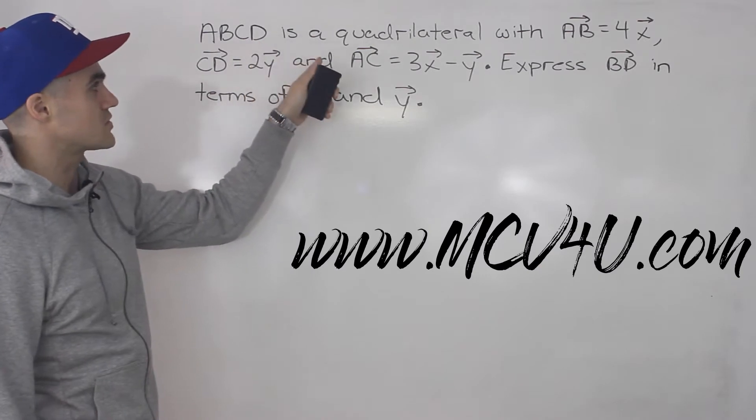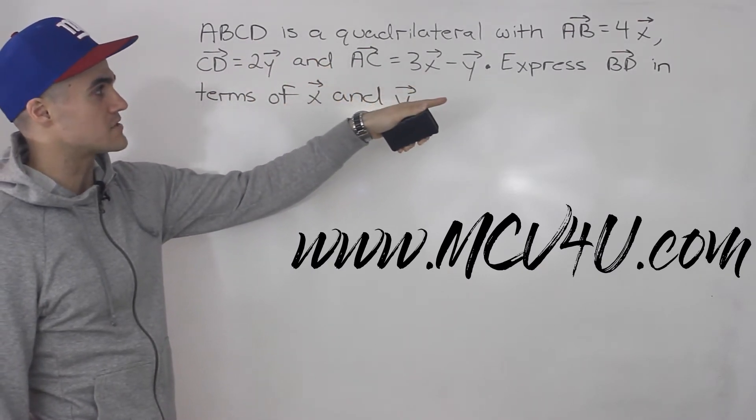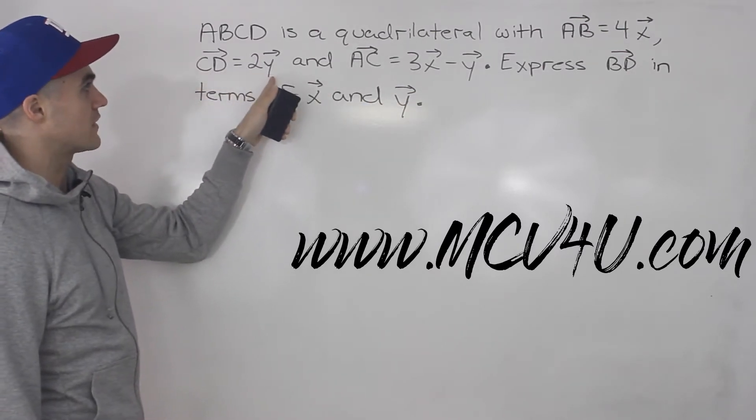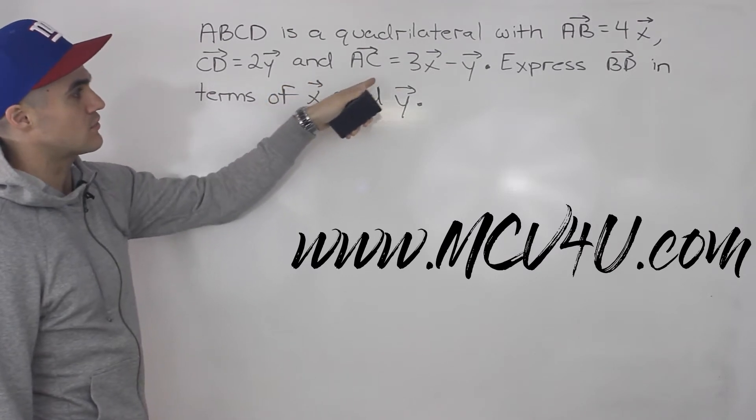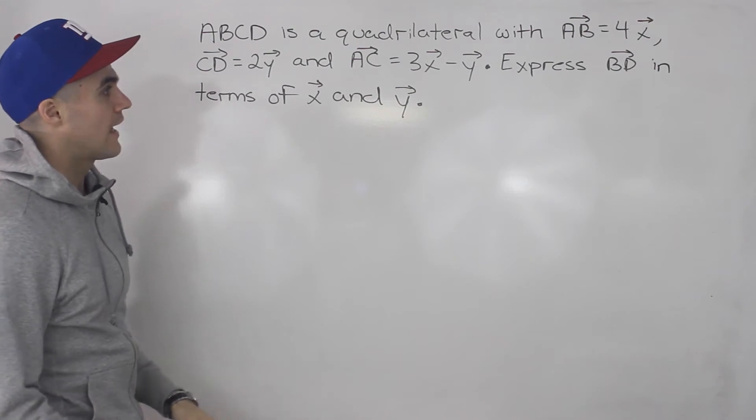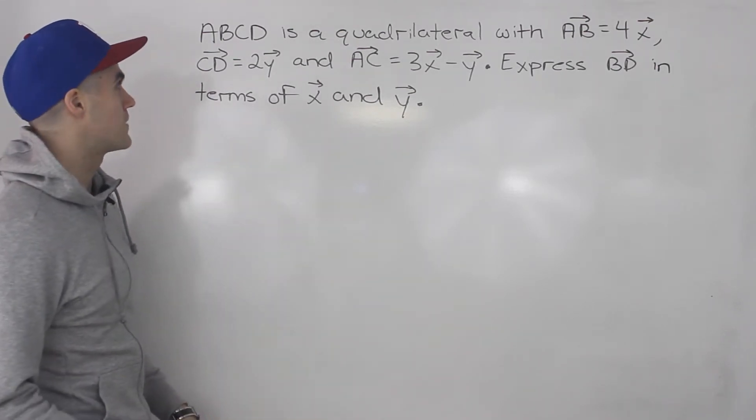ABCD is a quadrilateral where vector AB equals 4 times vector X, vector CD equals 2 times vector Y, and vector AC equals 3X minus Y. We have to express vector BD in terms of X and Y.